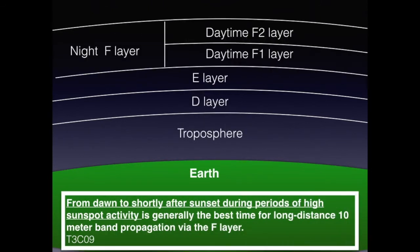During the day, there are two F layers: F1 and F2. At night, they merge into just one F layer. During the transition of these layers, coupled with high solar activity, is the prime time for long distance 10 meter communications. This is known as a band opening. For the exam, know that from dawn to shortly after sunset, during periods of high sunspot activity, is generally the best time for long distance 10 meter band propagation via the F layer.